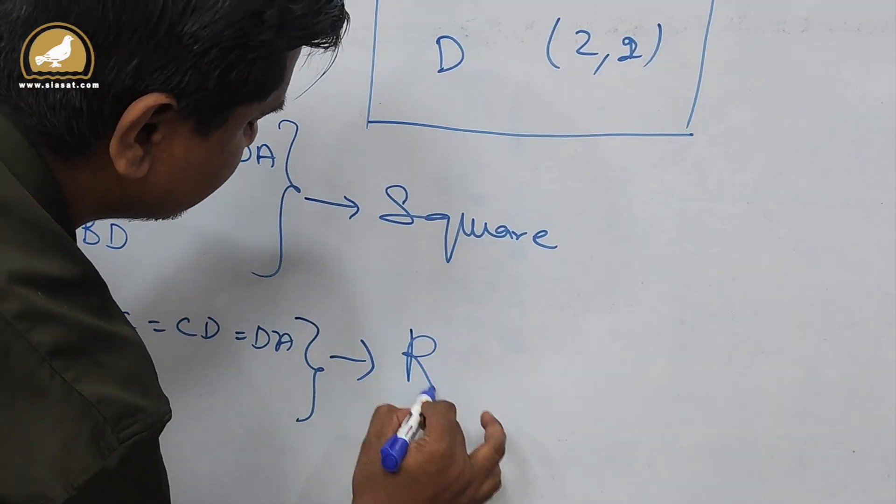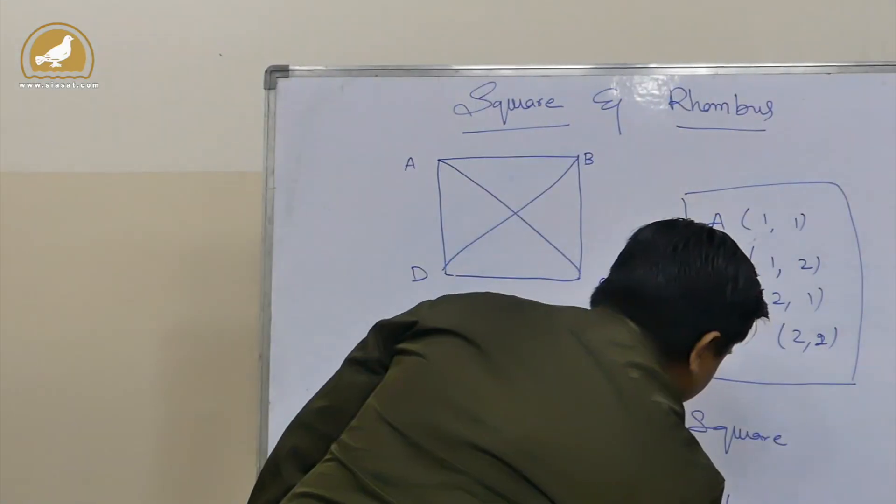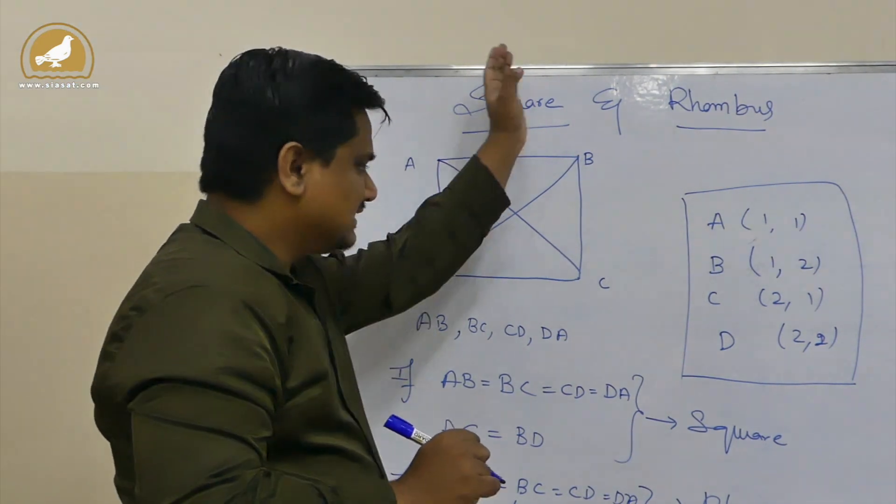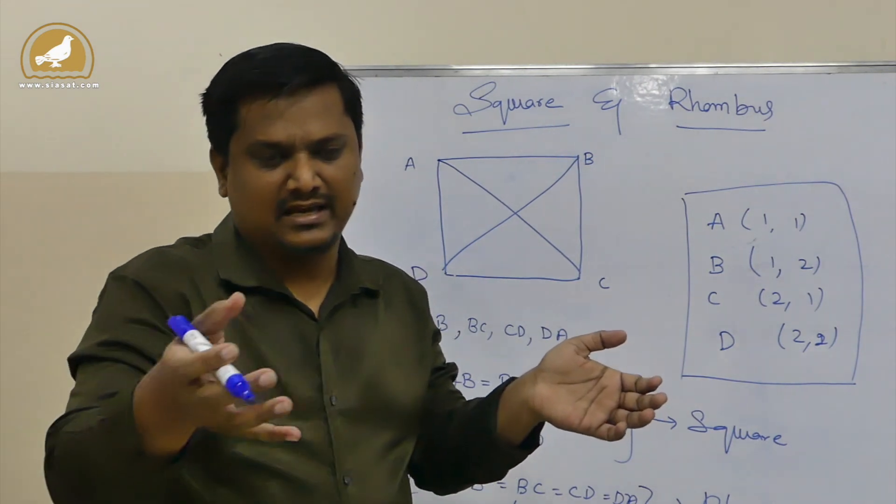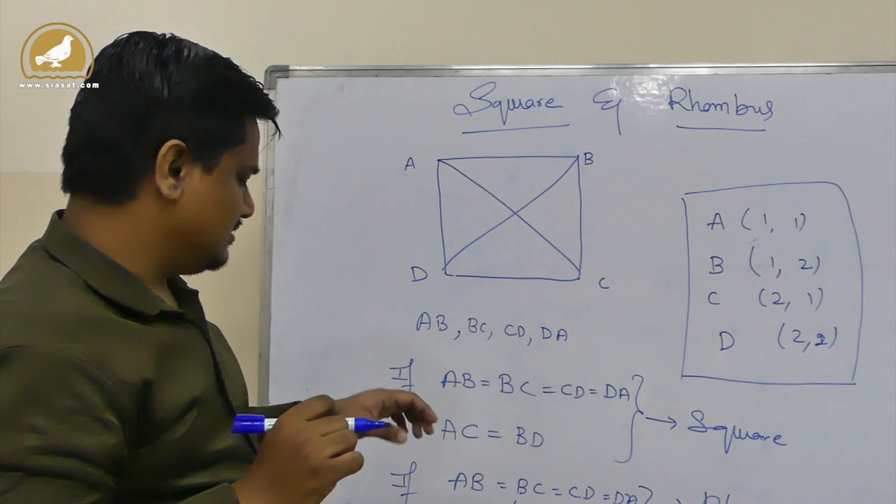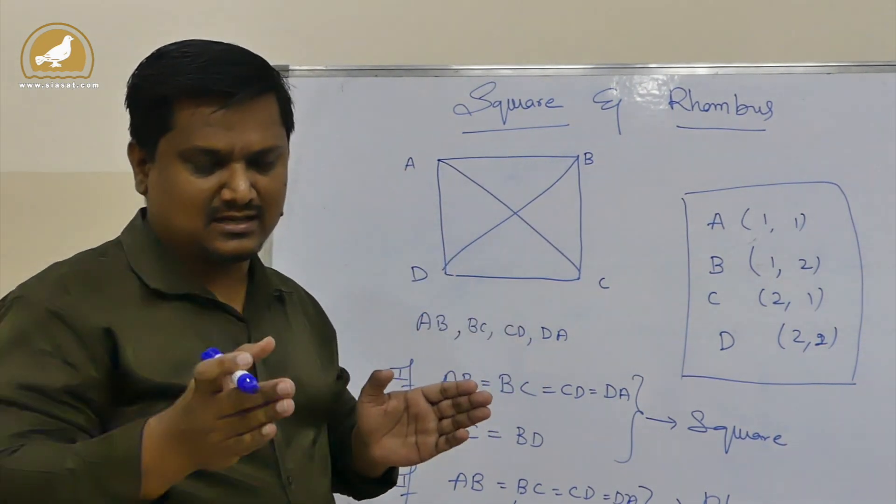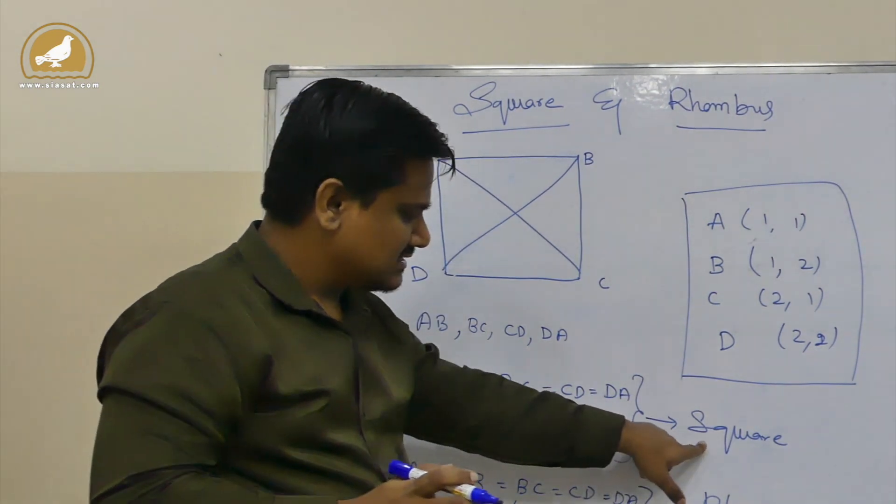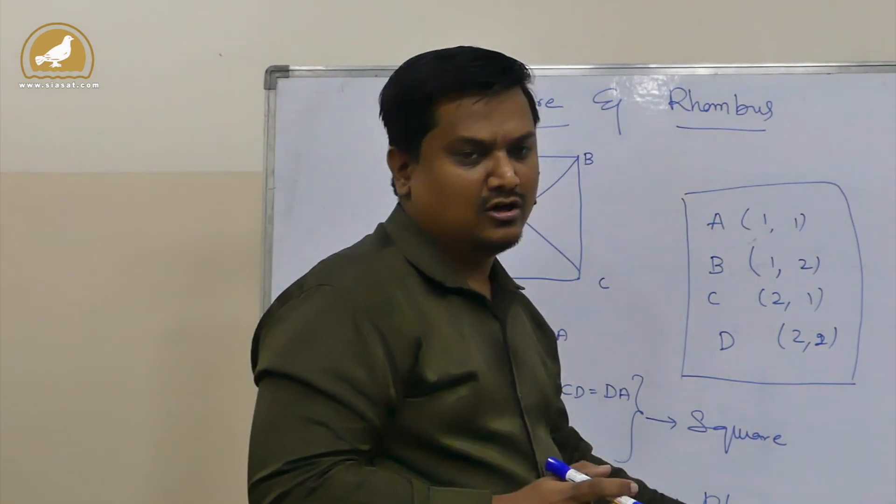If all the sides are equal, then it can be a square or it can be a rhombus. Now to decide what it is, you have to calculate diagonals. If the length of the diagonals are the same, then I can say it is a square. If the length of the diagonals are not the same, then I must say that it is a rhombus.